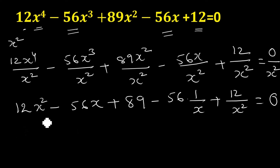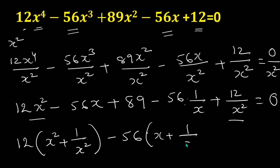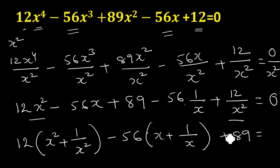Now take the common between terms. Take the common factor 12, and we get x² + 1/x². Take the common from the other two, which is 56, so we get minus 56 times (x + 1/x), then plus 89, equal to 0.